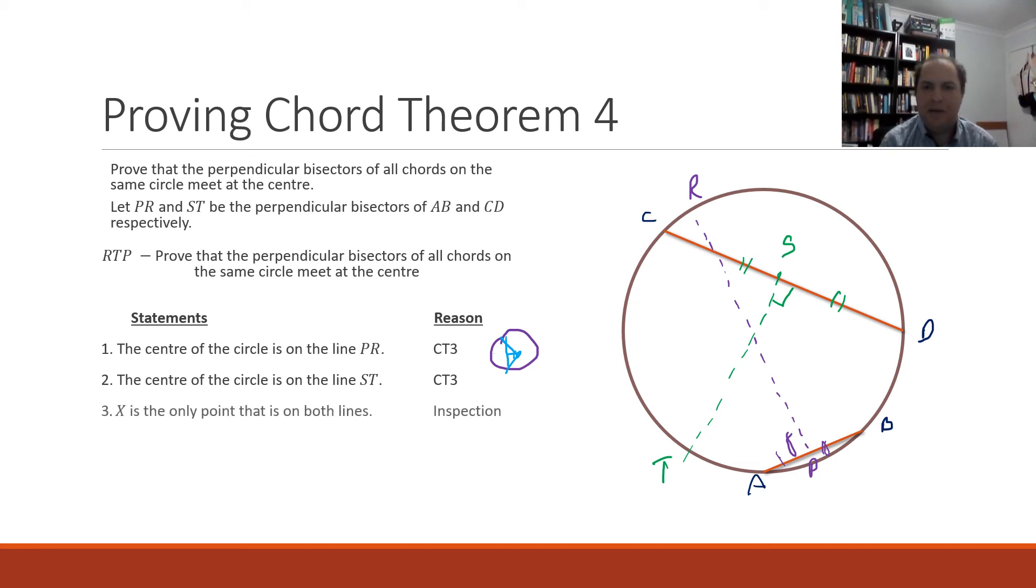Now just by looking at that there is only one point, let's call X, that is on both lines. There are no other places where those perpendicular bisectors will ever intersect. ST will go up and down, up to the right and down to the left. PR will go up to the left and down to the right. There's no other place those chords are going to cross.